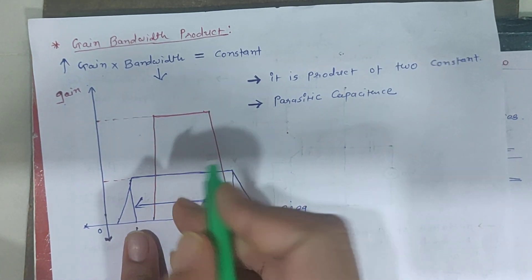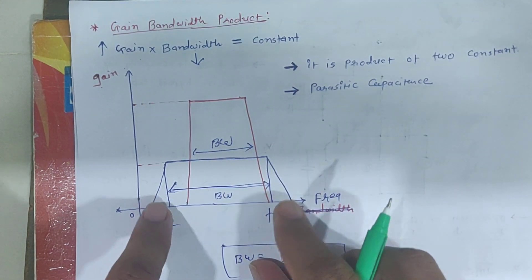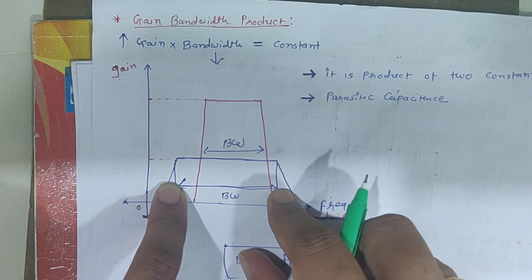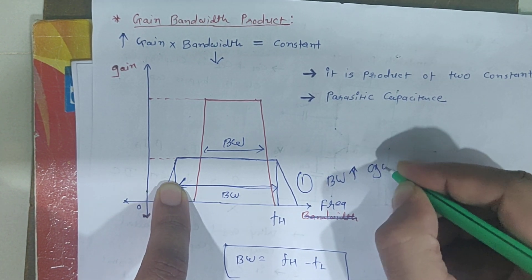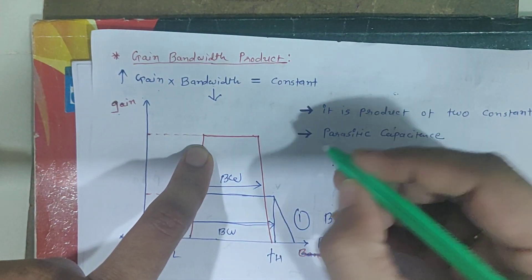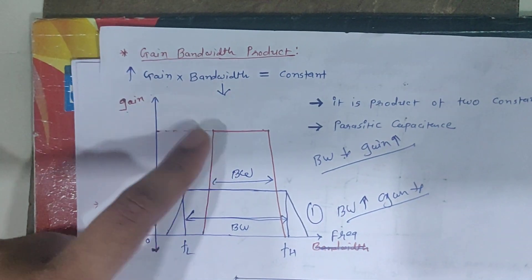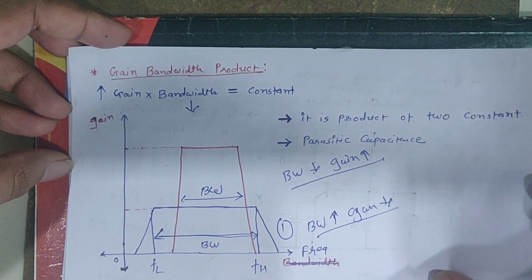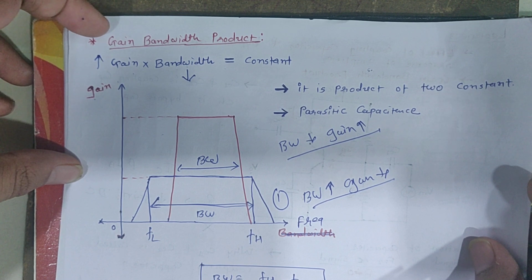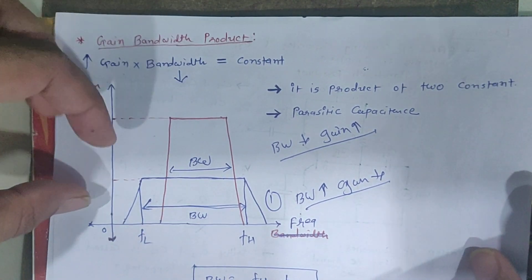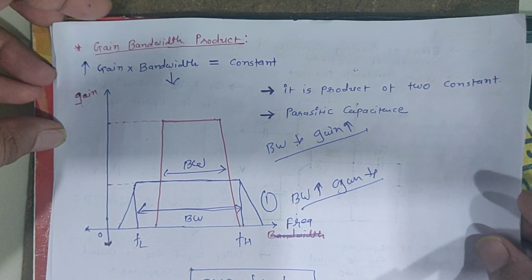We can see from the frequency response graphs: in the first case bandwidth is more and gain is less; if gain is increased, bandwidth decreases. As per the requirements of gain and bandwidth, we must make trade-offs during the amplifier design phase to fulfill both the gain requirement and the bandwidth requirement.